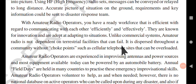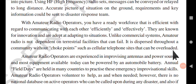Unlike commercial systems, amateur radio is not dependent on terrestrial facilities that can fail. It is dispersed throughout a community without choke points such as cellular telephone sites that can be overloaded. Commercial systems like mobile phones depend on network facilities like cell towers, which get destroyed during calamities. Amateur radio depends on radio waves and is completely different.